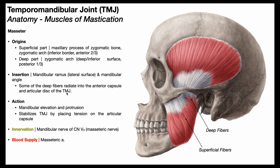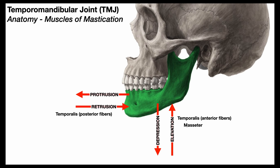Some of the deep fibers also radiate into the anterior capsule and the articular disc of the temporomandibular joint. Both the deep and superficial fibers of the masseter produce mandibular elevation and mandibular protrusion. However, because the deep fibers attach on the anterior articular capsule of the TMJ, they're able to stabilize the TMJ by placing tension on the articular capsule. The masseter is innervated by the masseteric branch of the mandibular nerve (V3), and its blood supply is via the masseteric artery.